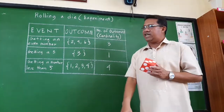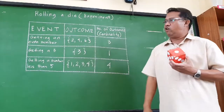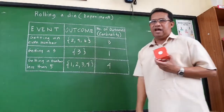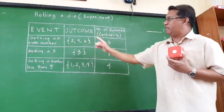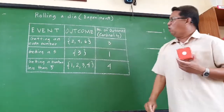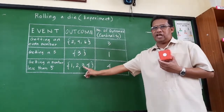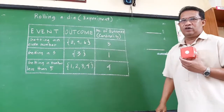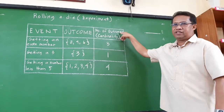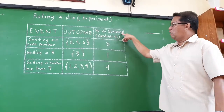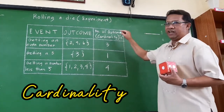Getting an even number, or getting a 3, or getting a number less than 5 are called events, or events of the experiment. While 1, 2, 4, 6, 3, 1, 2, 3, 4 are called outcomes.